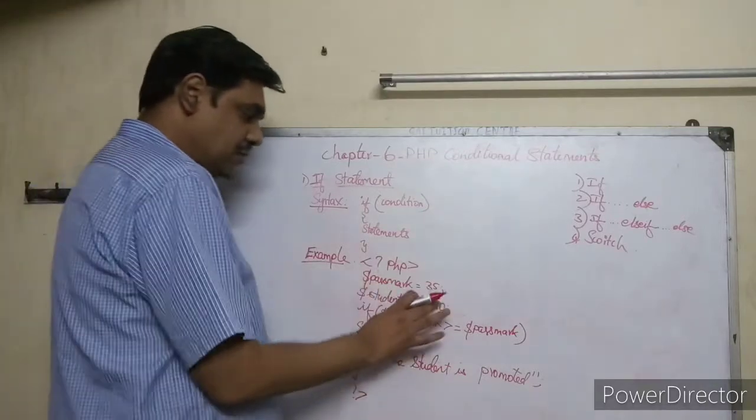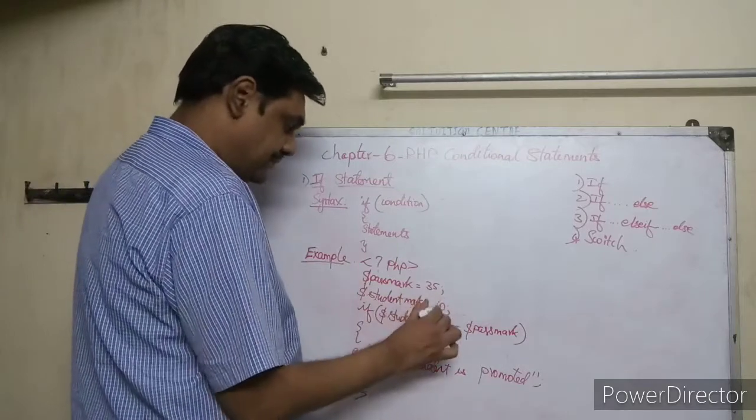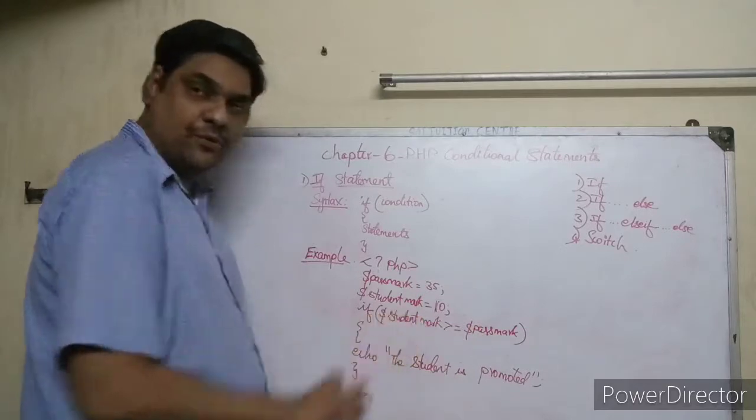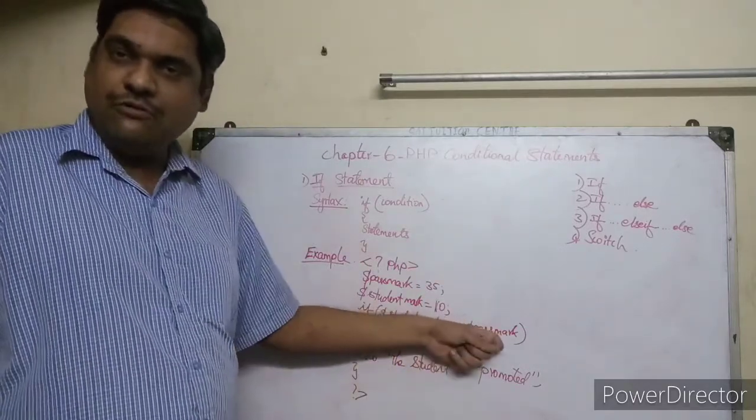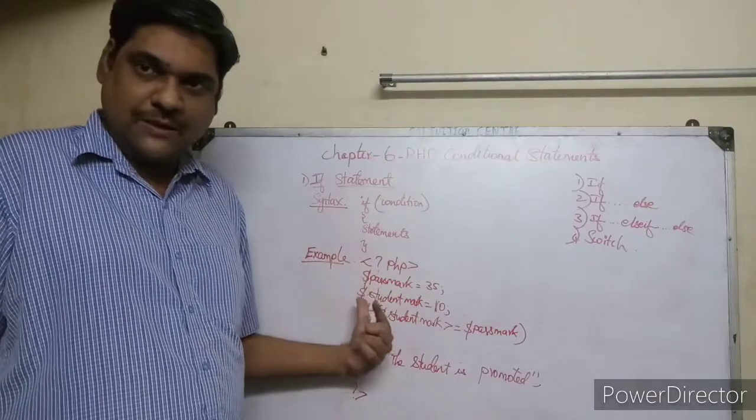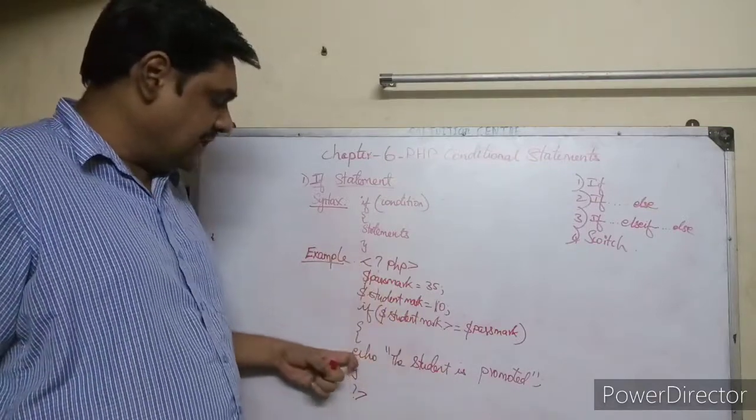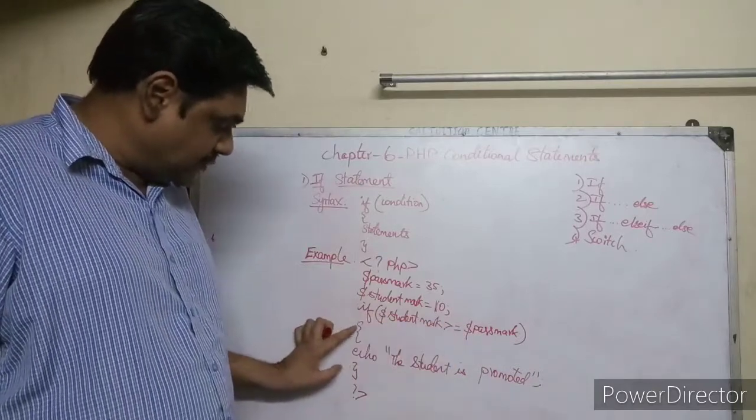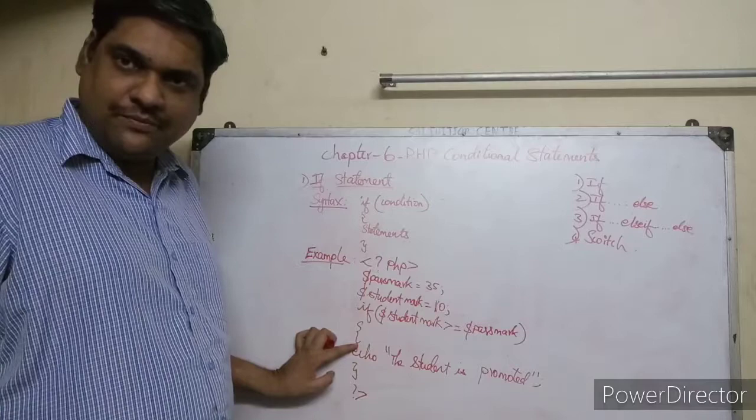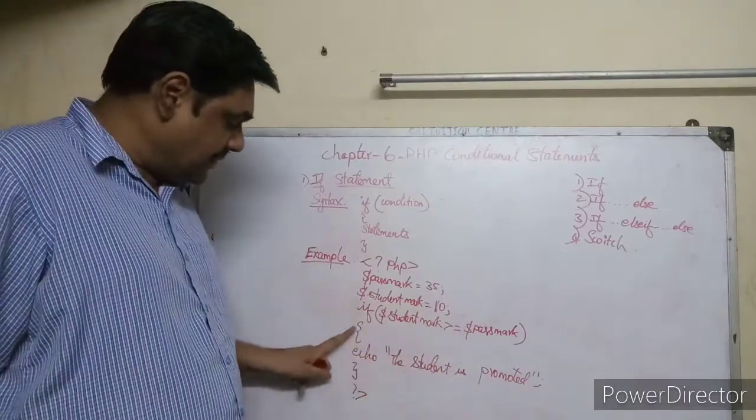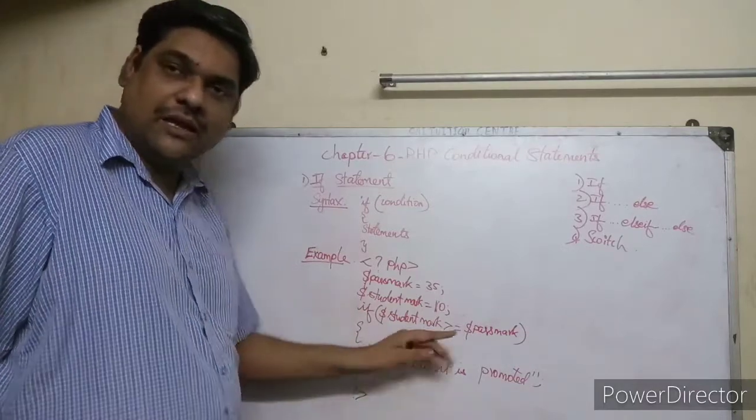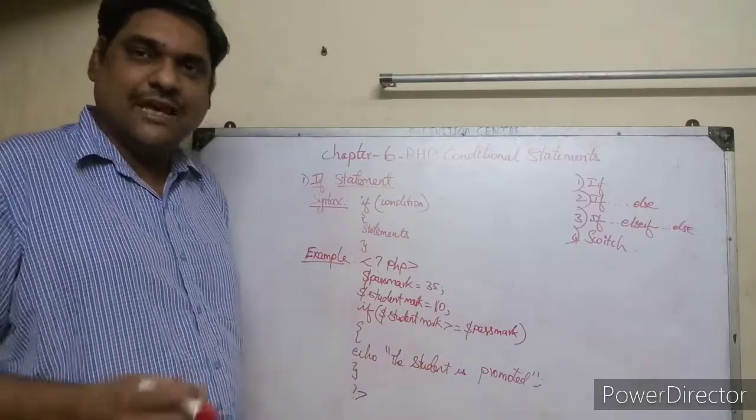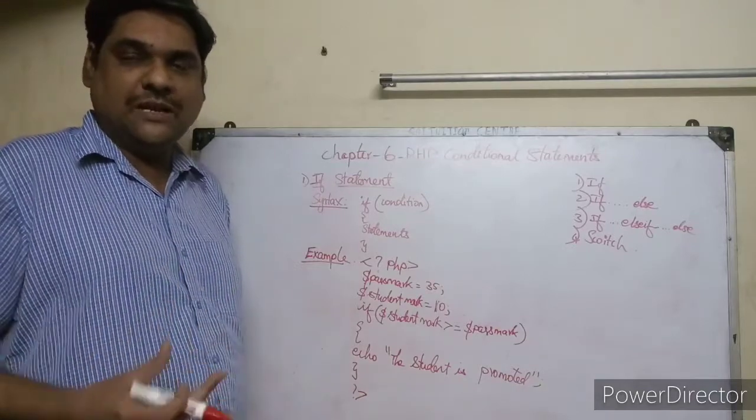Suppose student mark was 10 instead. Then student mark greater than or equal to pass mark would be false. When it's false, the computer will not enter the curly braces. If it's true, only then it enters; if false, it won't enter at all.